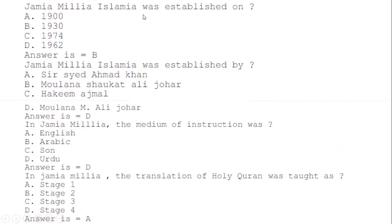Jamia Millia Islamia was established in: correct option B — 1930. It was established by: correct option D. The medium of instruction in Jamia Millia was: correct option D — Urdu. The translation of the Holy Quran was taught as: correct option A — stage one.